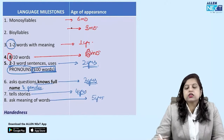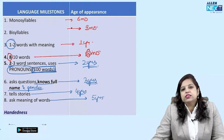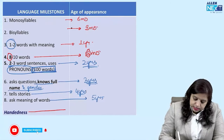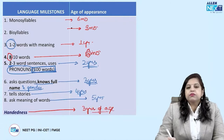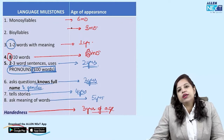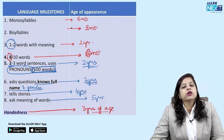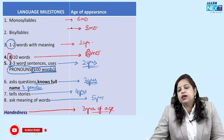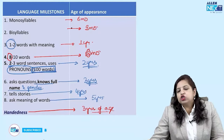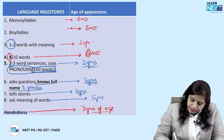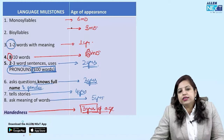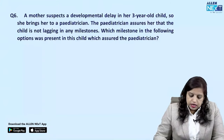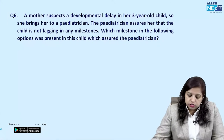Handedness is usually established by three years of age — meaning the child is clearly right- or left-handed. Some books say it may come as early as two years, but it is generally established by three years of age.